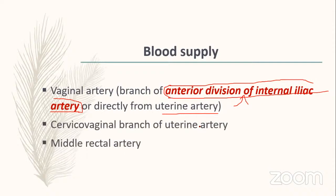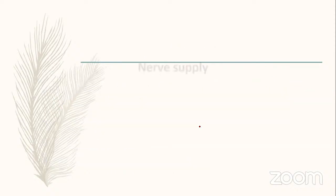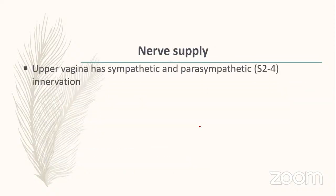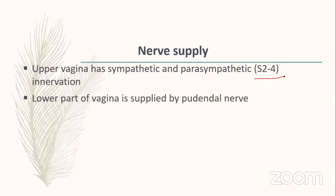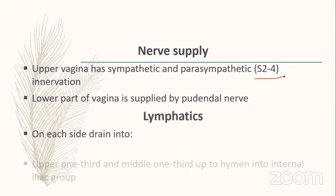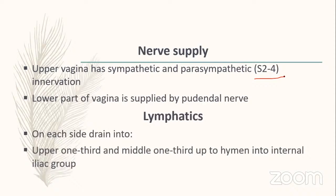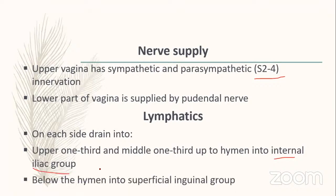Blood supply of the vagina: vaginal artery, a branch of the anterior division of the internal iliac artery, or directly from the uterine artery. Also supplied by the cervicovaginal branch of the uterine artery and the middle rectal artery. Venous drainage is into the internal iliac veins. Nerve supply: upper vagina — sympathetic and parasympathetic (S2–S4); lower vagina — pudendal nerve. Lymphatics drain above the hymen into the internal iliac group, and below the hymen into the superficial inguinal group.